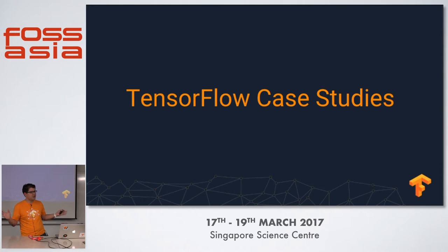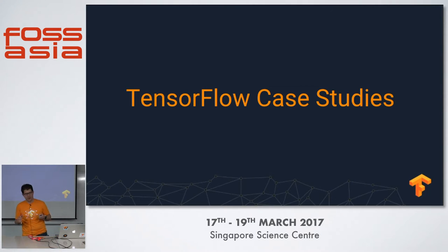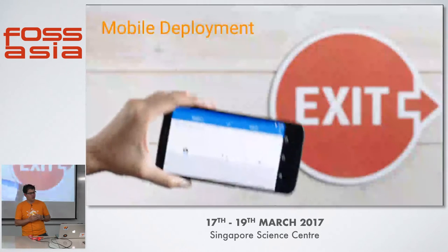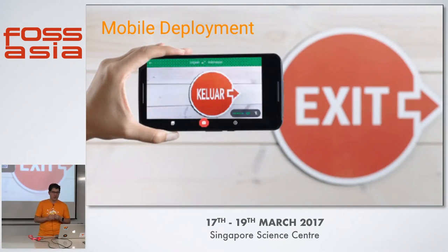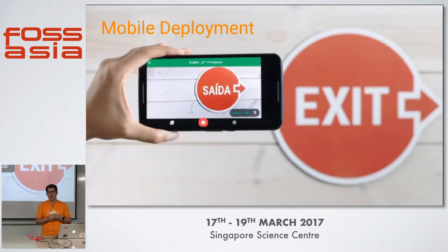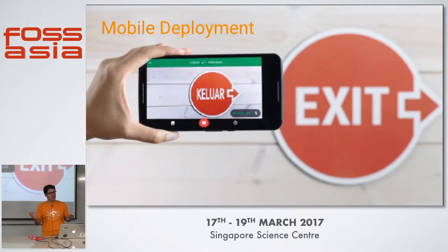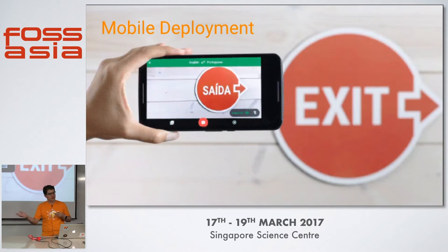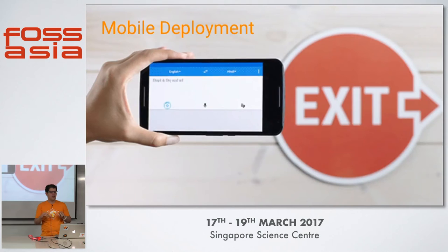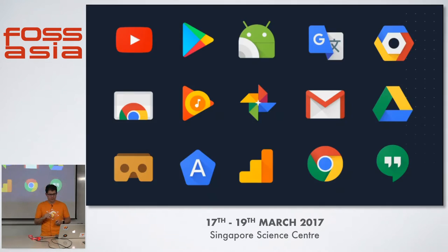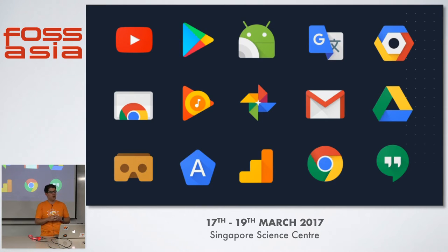Let me go through some case studies. At Google, one of the coolest apps lets you translate signs — it blends image recognition, language modeling, and computer graphics. It recognizes the original sign, finds the text, runs it through a language model, does the translation, and re-renders the new text over the old text. Inbox Smart Reply is also done in TensorFlow. All these Google apps — Search, Gmail, Photos, and more — have some part of TensorFlow and deep learning in them.